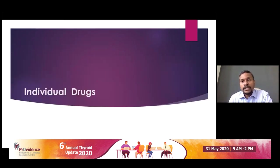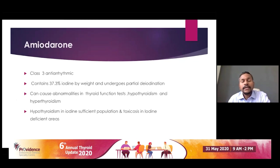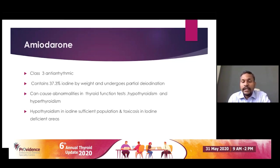The most described and most reported drug causing thyroid dysfunction is amiodarone. As you all know, amiodarone is a class III antiarrhythmic containing about 38% iodine by weight. It can cause thyroid problems at three levels: it can make thyroid function tests abnormal, induce hypothyroidism, and also hyperthyroidism. Hypothyroidism is described in patients from iodine-sufficient areas, while thyrotoxicosis occurs in iodine-deficient areas.